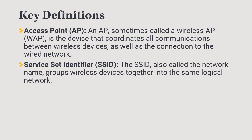The SSID is going to be the name of the network, and we use that to help group devices together. A security protocol we might use is setting up our wireless access point to not broadcast our SSID. What that would require is for a device to connect to that wireless access point, we would have to actually type in the SSID or the name of the network because it would not be discoverable.